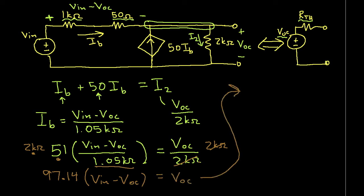Now we solve this for VOC. And we get 97.14 times VN is equal to 97.14 plus 1 times VOC. Finally, solving for VOC, we get it's equal to 97.14 divided by 97.14 plus 1 times VN.